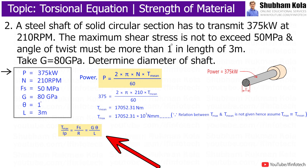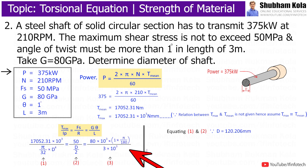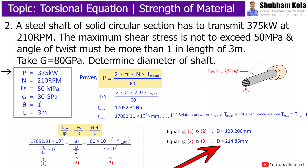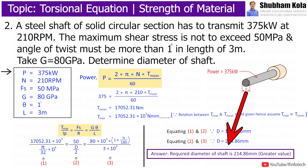The torsional equation is T_max / IP = Fs / R = G·θ / L. By equating the first and second parts, the value of diameter we got is 120.206 mm. By equating the second and third parts, the value of diameter we got is 214.86 mm. Therefore, the required diameter of the shaft is 214.86 mm, which is the greater value.